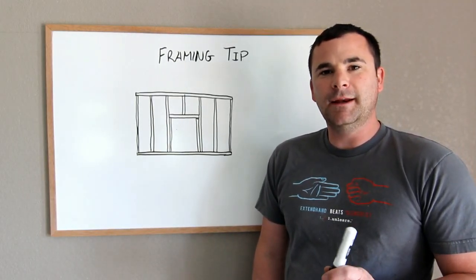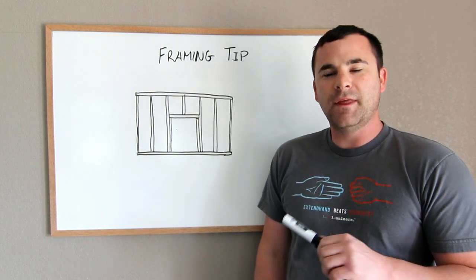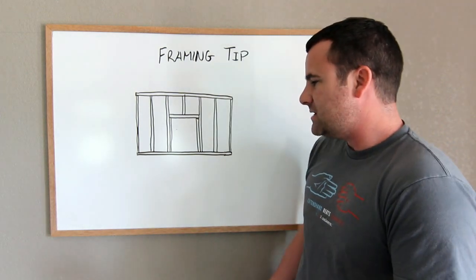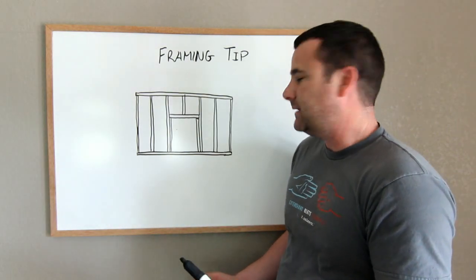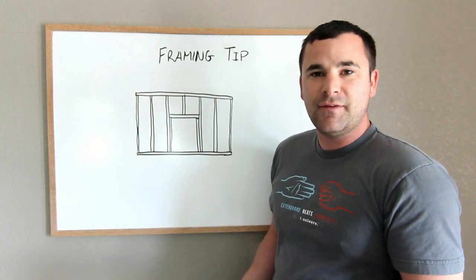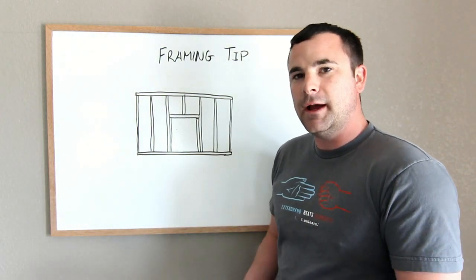Keep the bottom plate intact anytime you're doing any type of framing with any type of door or closet opening. When you stand your wall, when you frame it, your bottom plate is full length of whatever wall you're building. Don't cut it out until after your wall is secure to your chalk line and you know it's not going to move anywhere.